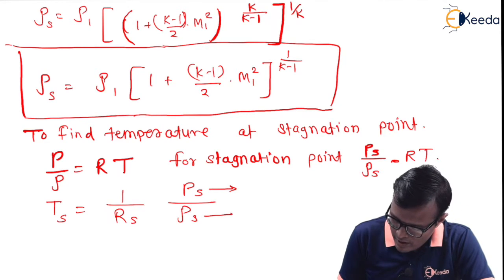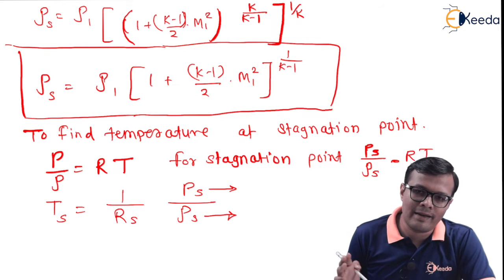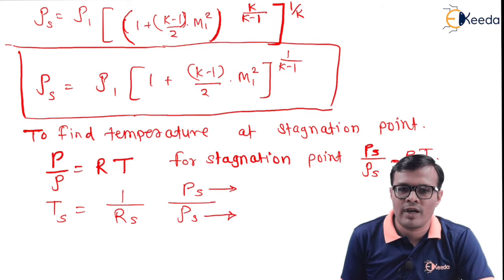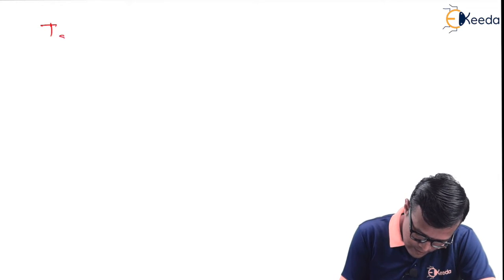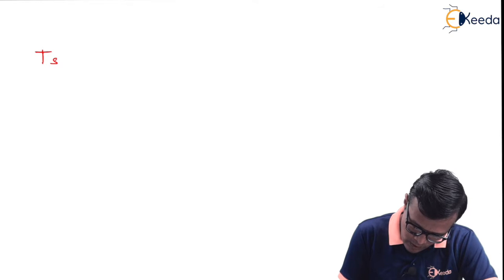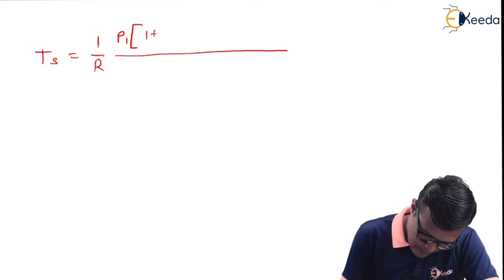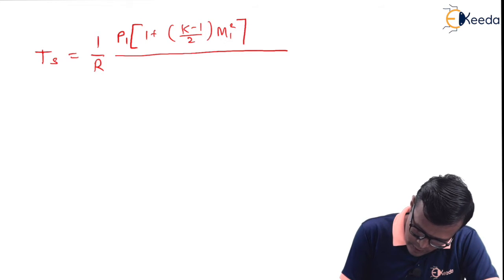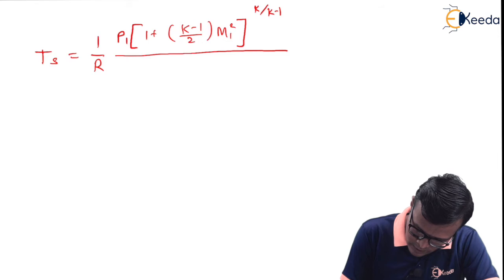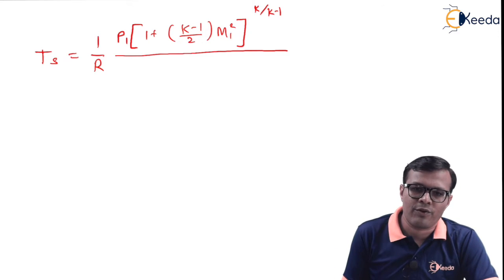Stagnation pressure and stagnation density have already been derived. So we will just substitute the expressions we have already derived for p_s and rho_s. So T_s is equal to 1 upon R times p_s, which has the relation p1 times bracket 1 plus (k minus 1)/2 times m1 squared, this whole bracket to the power k upon k minus 1.